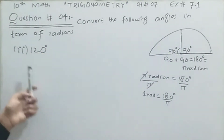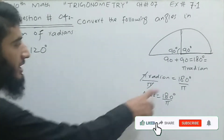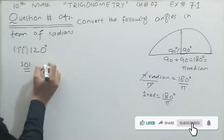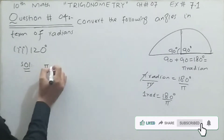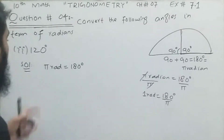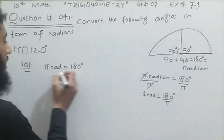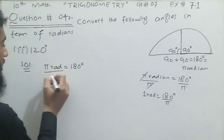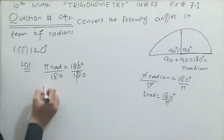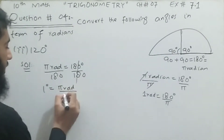Now move to the second part of question number four: convert 120 degrees in terms of radian. Using the same relation, π radian is equal to 180 degrees. We are required to find 120 degrees, so first we find one degree by dividing both sides by 180, leaving us with one degree equal to π radian divided by 180.